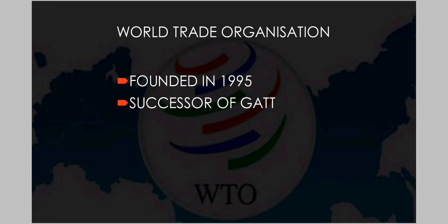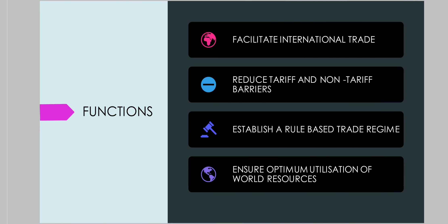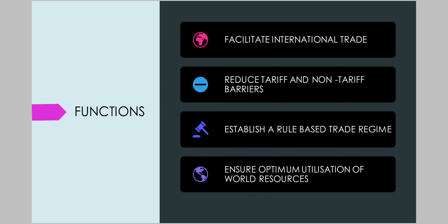Coming to the organization which is facilitating globalization throughout the world: World Trade Organization, founded in 1995 as a successor of GATT. WTO aims at removing restrictions from trade which were imposed by different countries. Thus, it is facilitating international trade by advocating reduction in tariff and non-tariff barriers. It also aims at establishing a rule-based trade regime and ensuring optimum utilization of world resources.